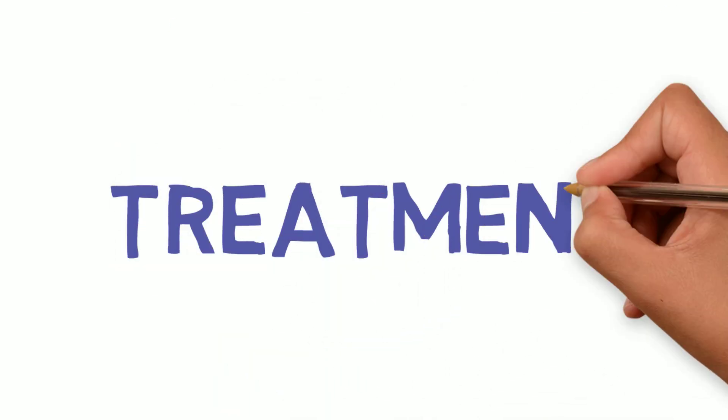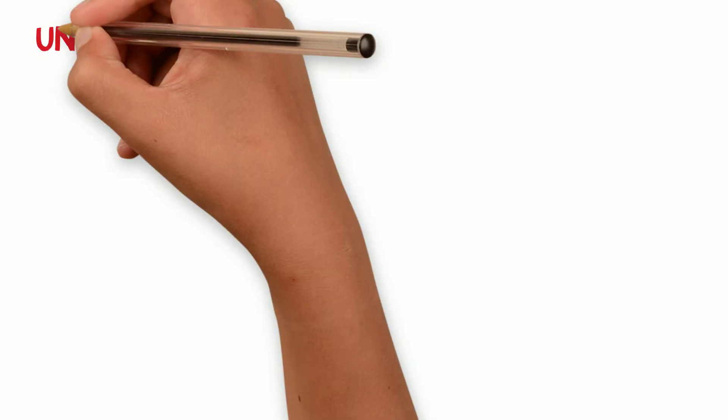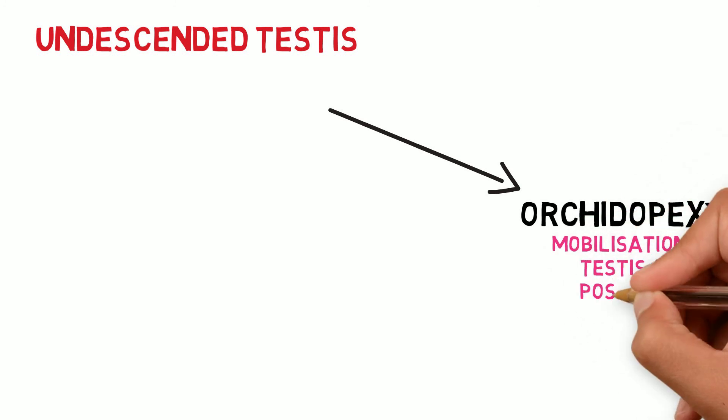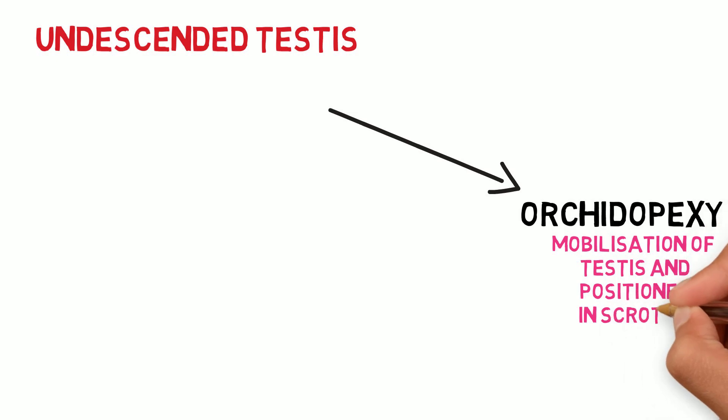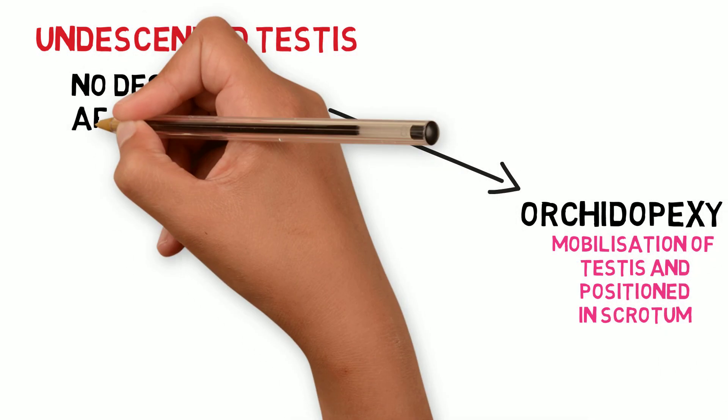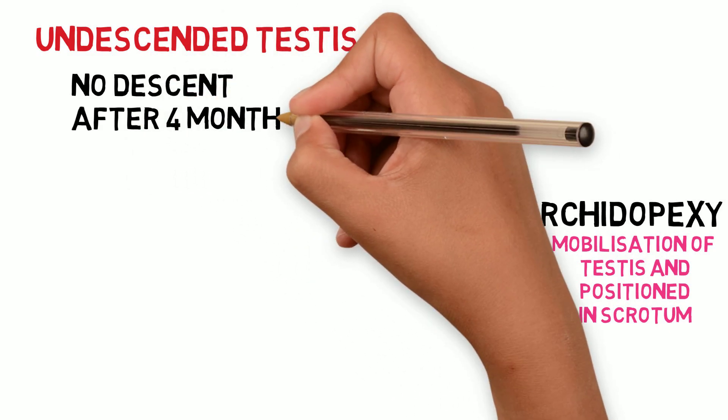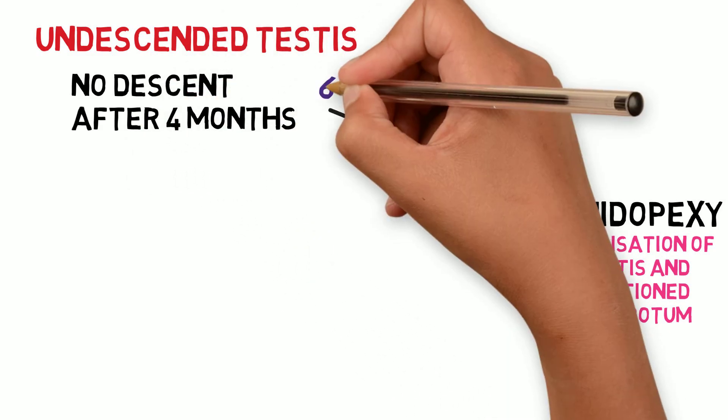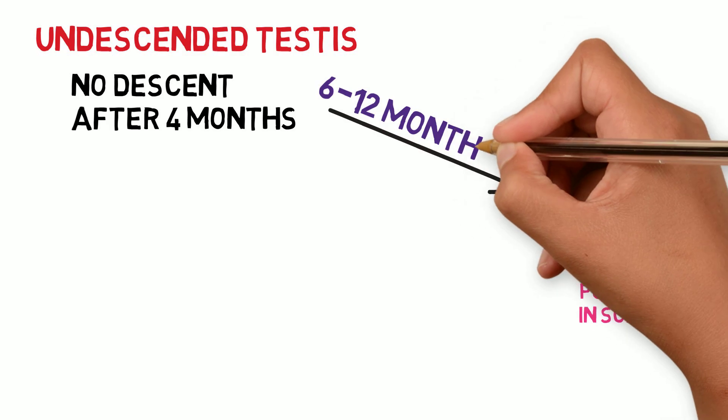Treatment for undescended testis is orchidopexy. Here the testis is mobilized and positioned in the scrotum. Because descent is not possible after 4 months of age, it's usually done between 6 to 12 months of age.